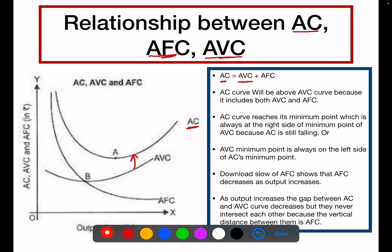The third point is that the AC curve is always above the average variable cost curve, because it includes both AVC and AFC. The next point is that both average cost and average variable cost fall, reach their minimum point, and then start rising.